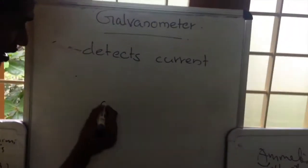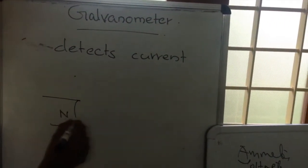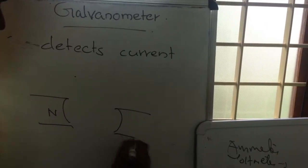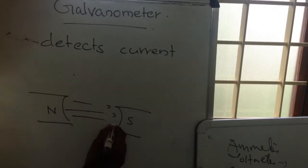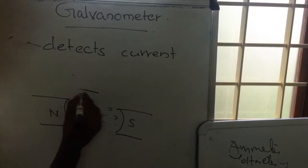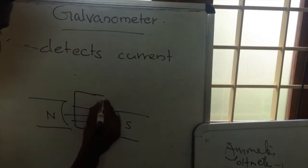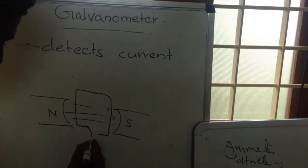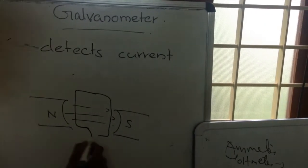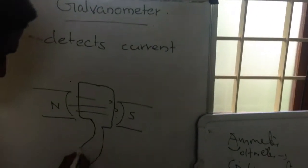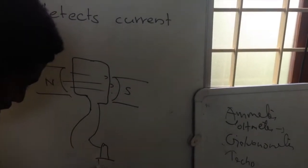Galvanometer is basically having two poles, north and south pole, which creates a magnetic field. Then there will be a loop like this. This loop will have two ends. These two ends will be seen here.